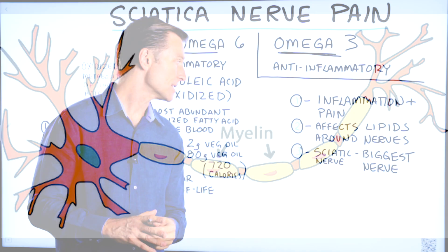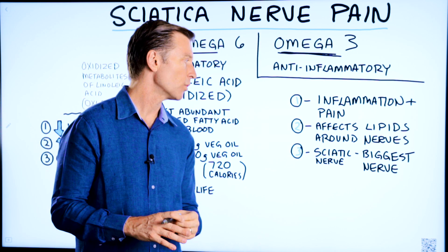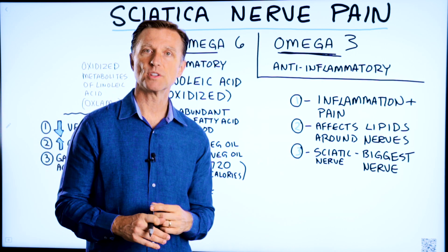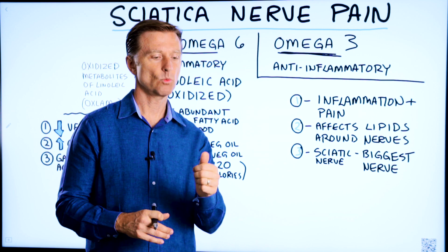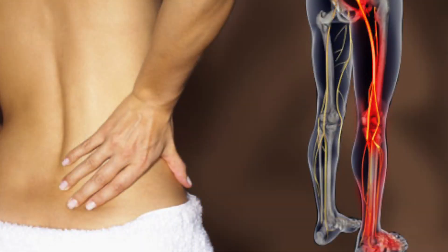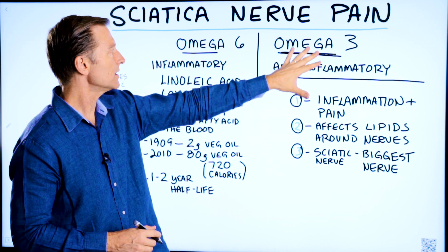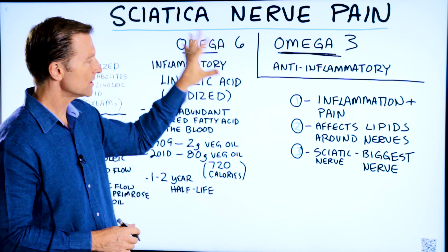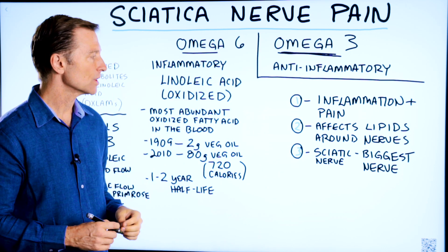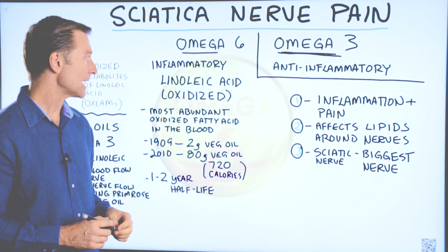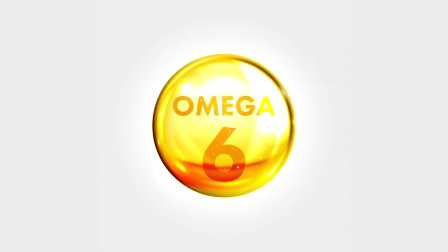What's unique about the sciatic nerve is that it's one of the biggest nerves in the body — about the width of a thumb. So it's a huge nerve. And if you have an imbalance where you don't have enough omega-3 and you have too much omega-6, it can really target the sciatic nerve.